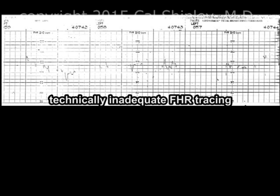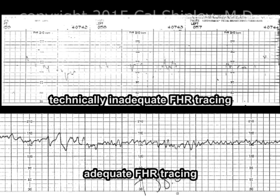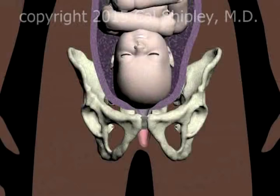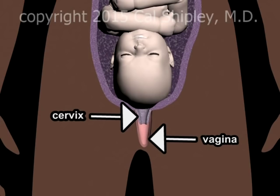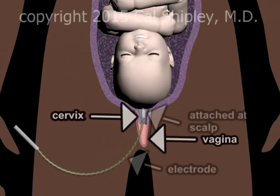Here is an example of a technically inadequate tracing produced by an external monitor system. Compare it to a normal tracing — the inadequate tracing would be virtually impossible to interpret. In such instances, an electrode is attached to the fetal scalp, ensuring a good quality tracing. The electrode is inserted through the vagina and cervix and, by means of a coil, attached to the scalp.